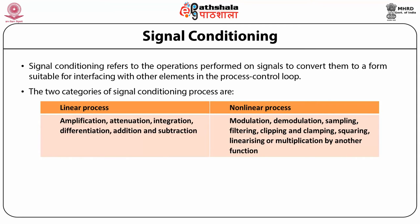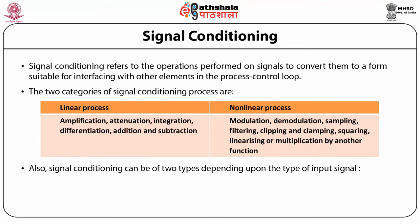In the case of non-linear processes, we have modulation, demodulation, sampling, filtering, clipping and clamping, squaring, linearizing or multiplication by another function. Signal conditioning can also be of two types depending upon the type of input signal: first, DC signal conditioning, and second, AC signal conditioning.